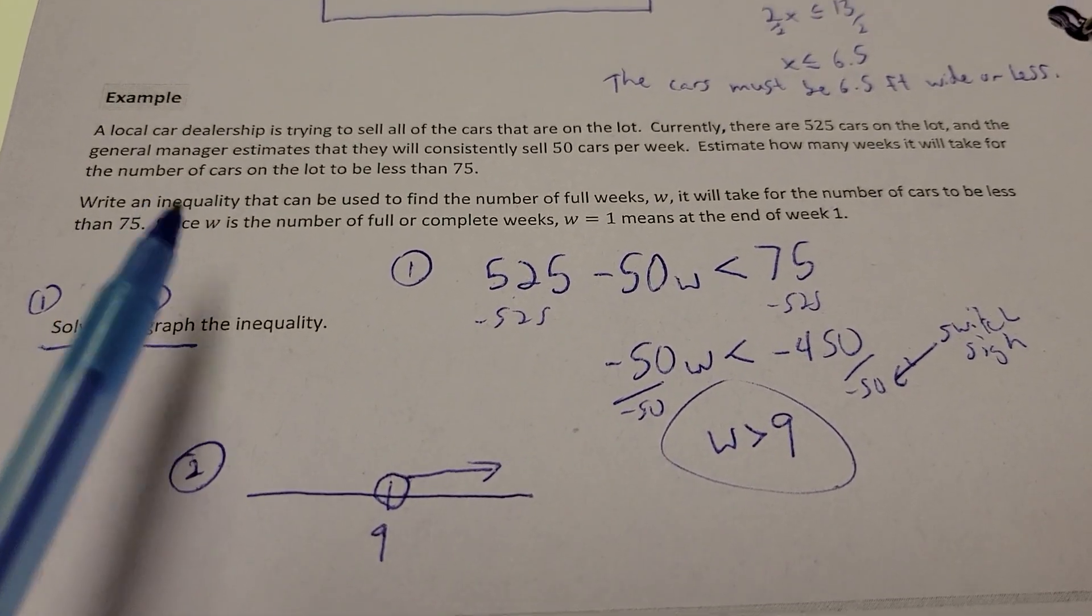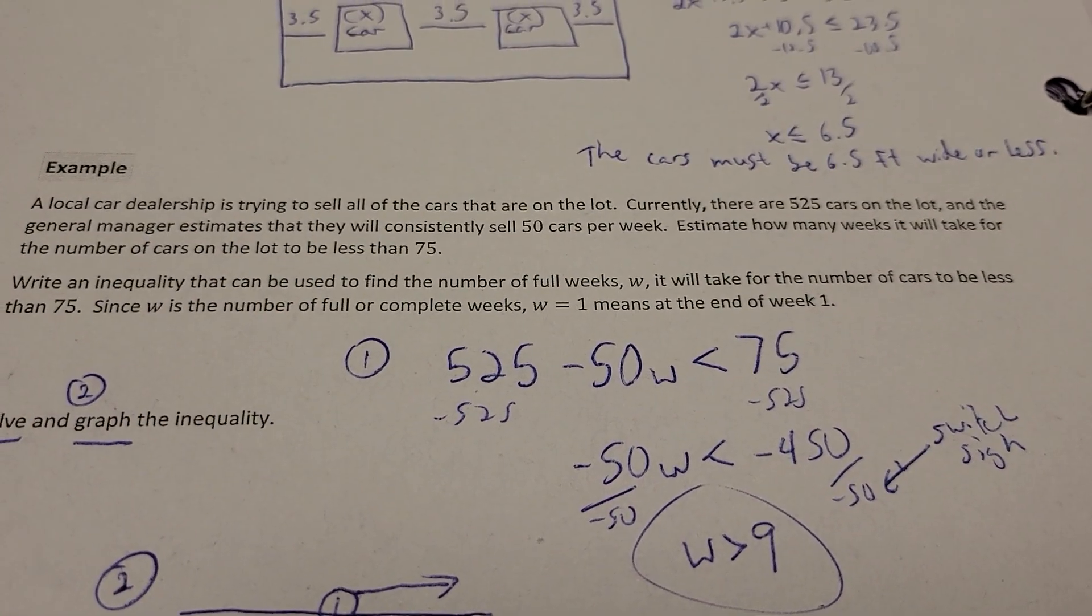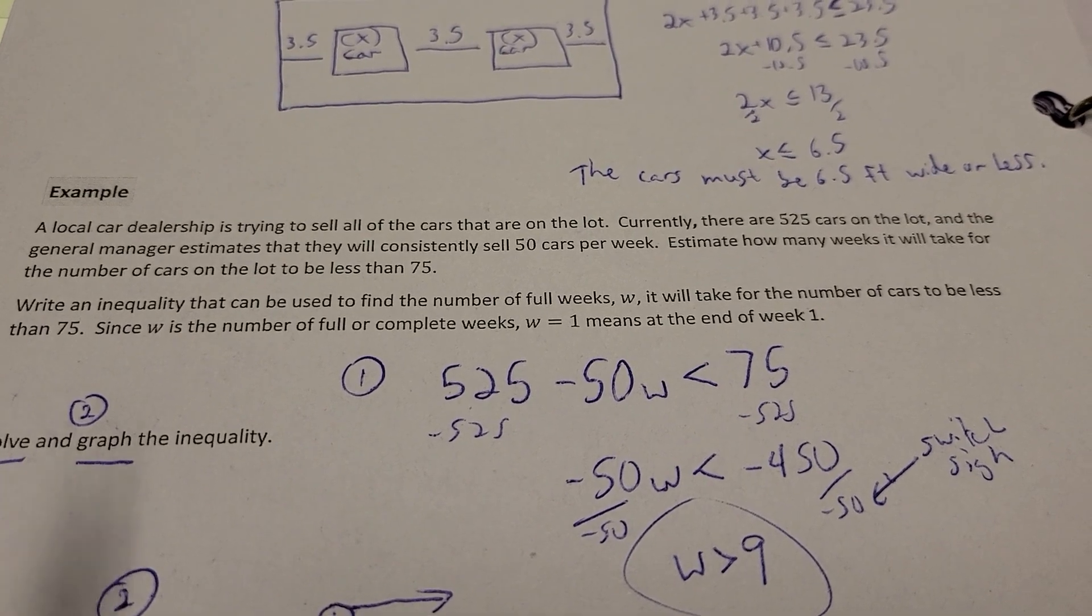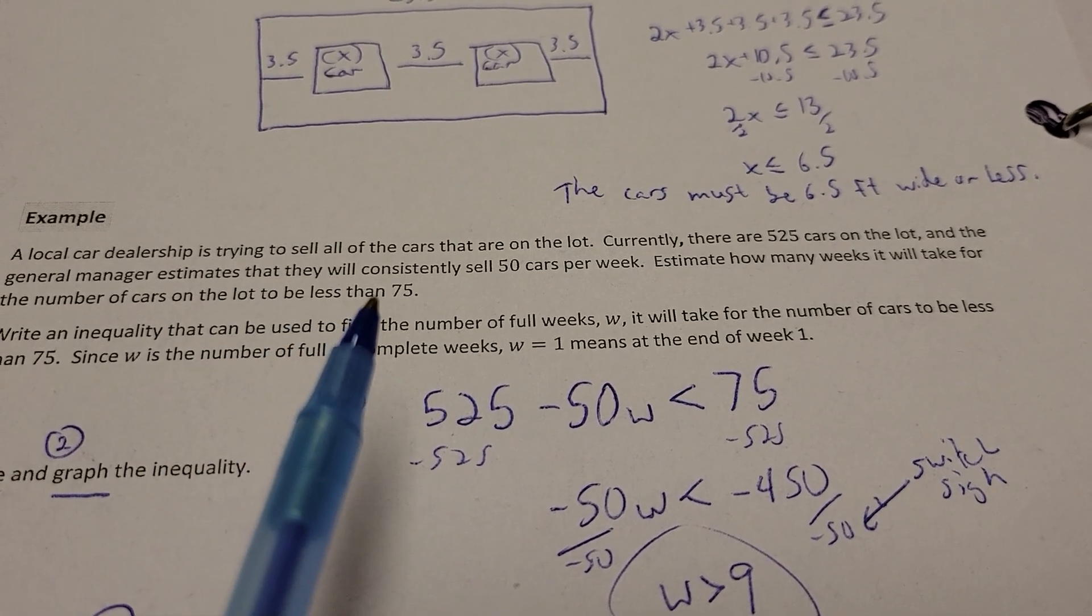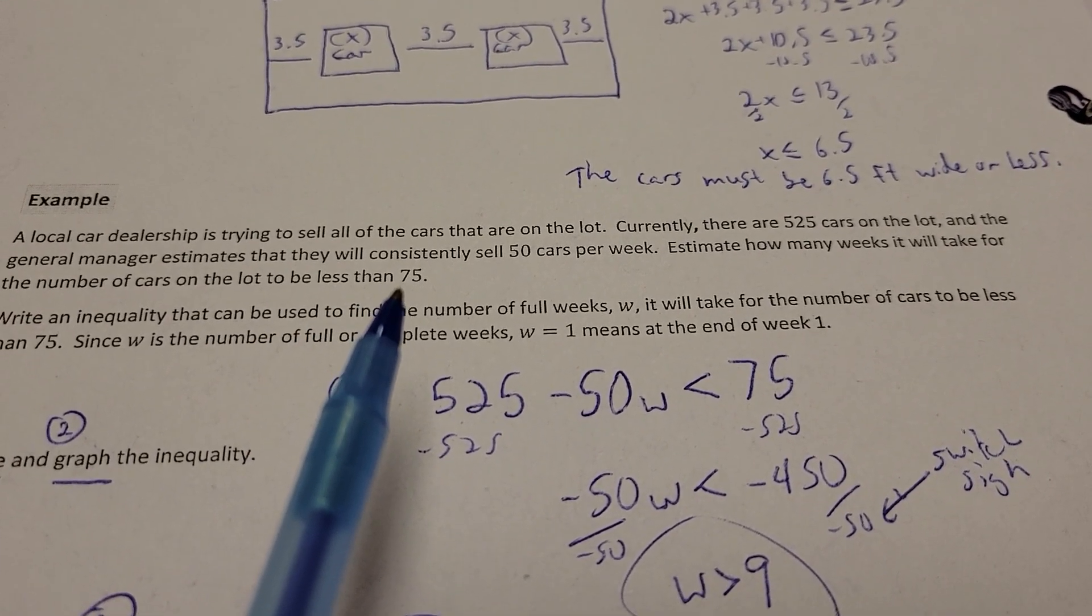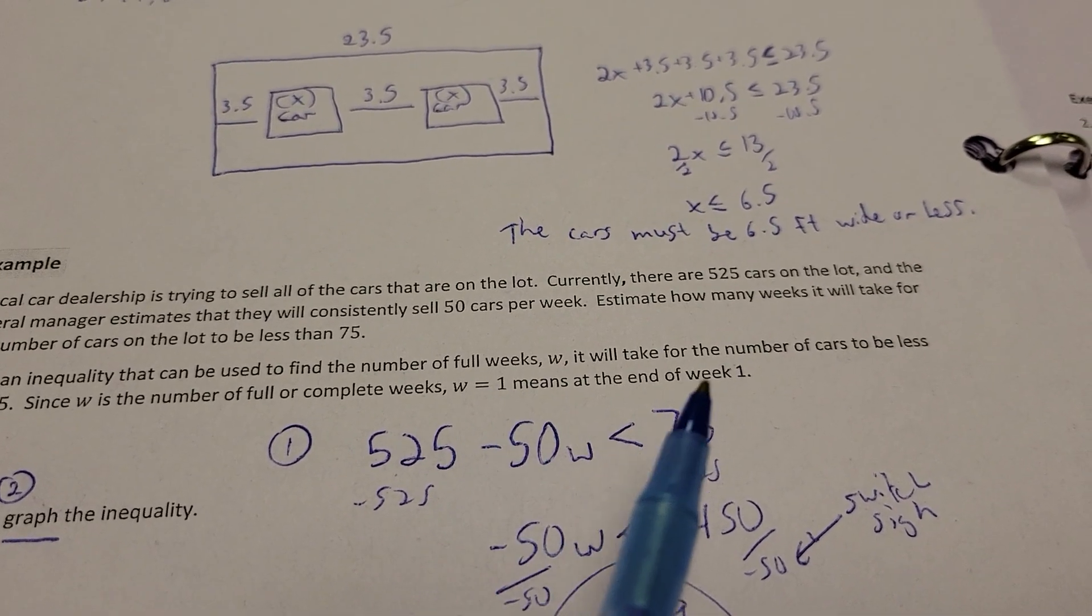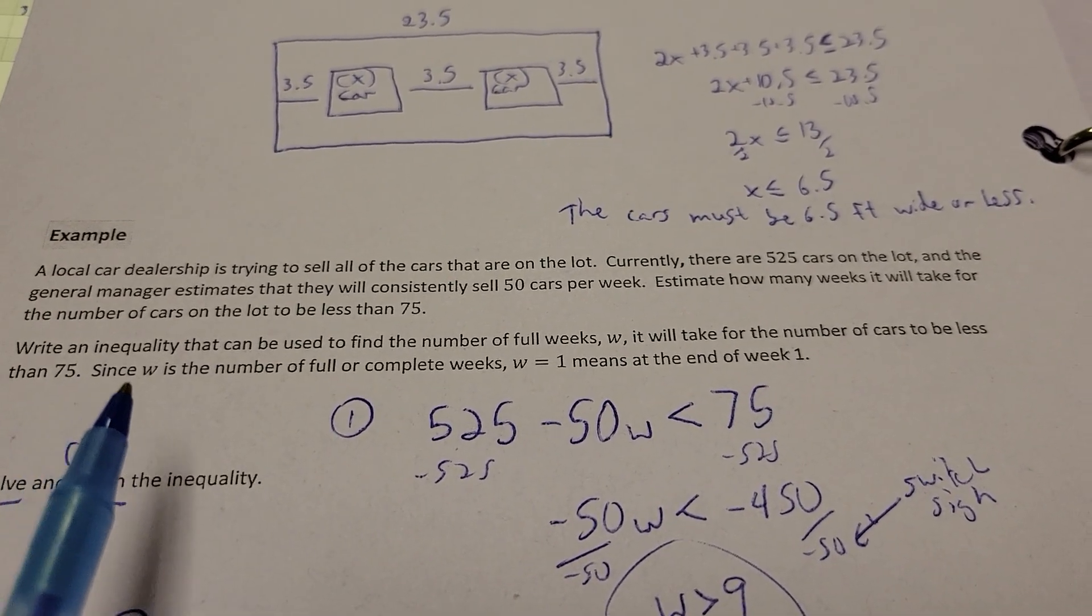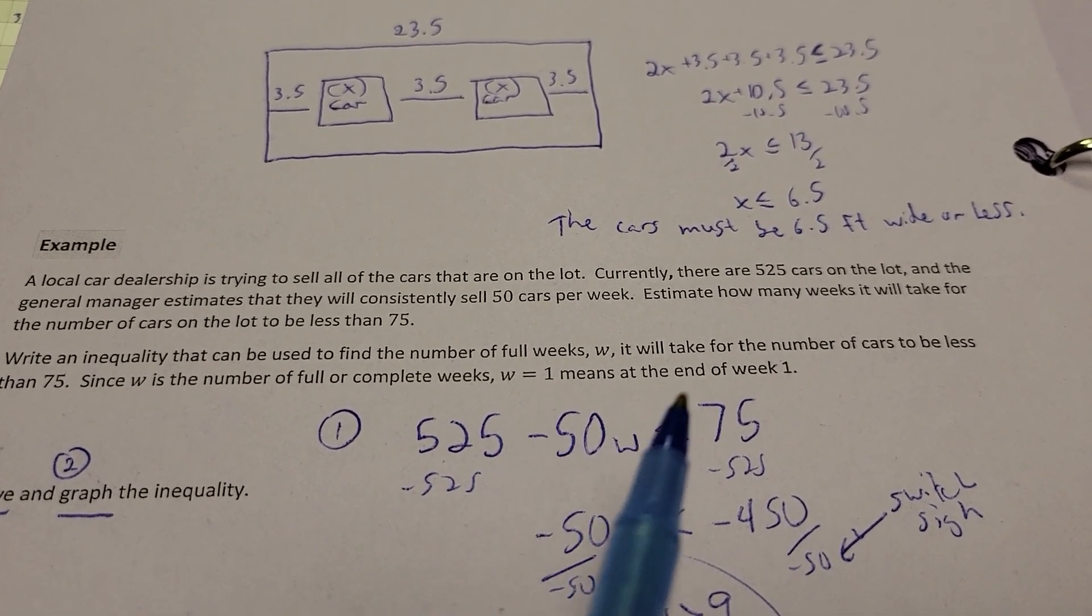Next up, our next example, a local car dealership is trying to sell all the cars that are on the lot. Currently, there are 525 cars in the lot, and the general manager estimates they'll consistently sell 50 cars per week. Estimate how many weeks it will take for the number of cars in the lot to be less than 75. There's an inequality that can be used for the number of full weeks, W, it will take for the number of cars to be less than 75.